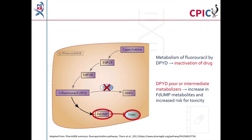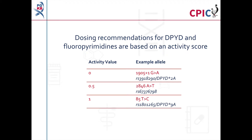If a patient is a DPYD poor or intermediate metabolizer, more molecules are available for conversion into FdUMP. This leads to increased inhibition of the TYMS enzyme and puts the patient at an increased risk of severe or fatal toxicity.